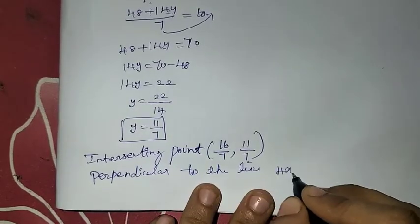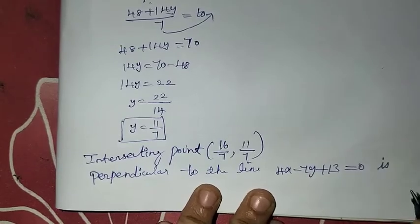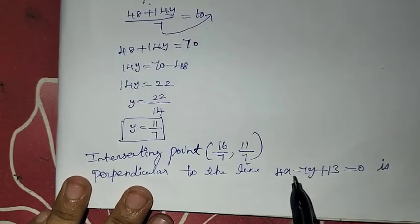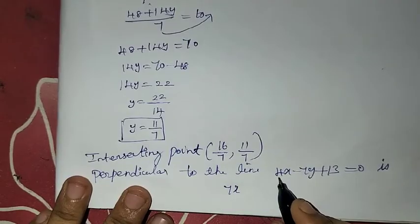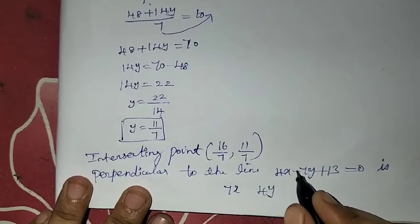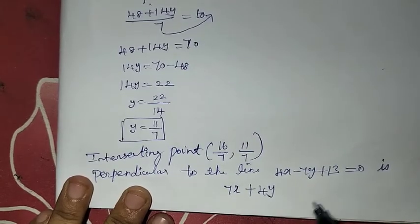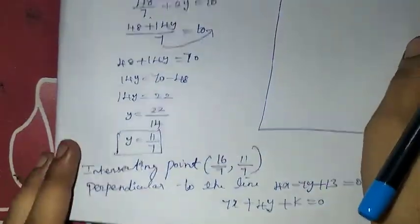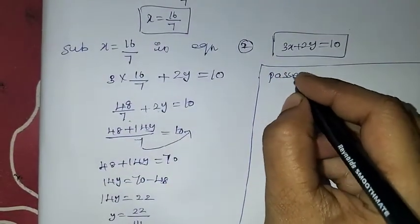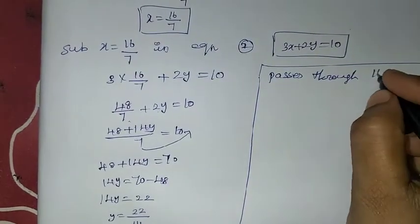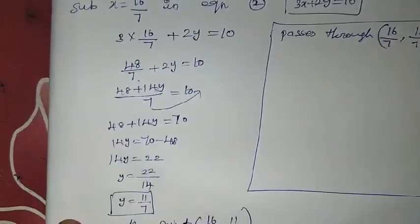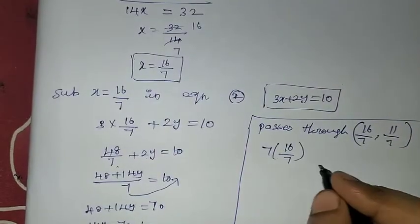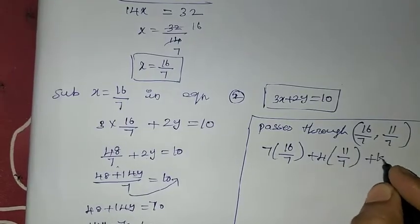The required line is perpendicular to 4x minus 7y plus 13 equal to 0. For a perpendicular line, we exchange the coefficients and change the sign. The line passes through the point (16/7, 11/7). Substituting: 7x into 16 by 7 plus 4 into 11 by 7 plus k equal to 0.